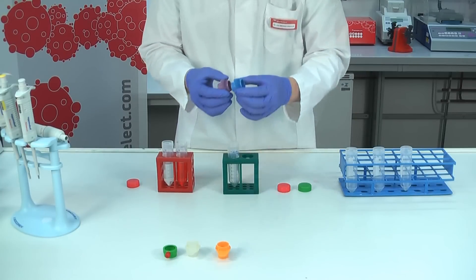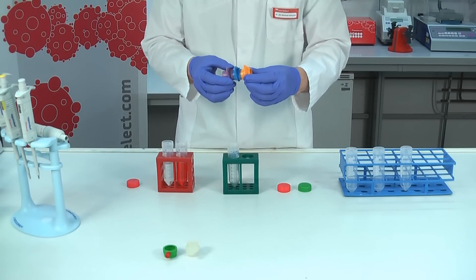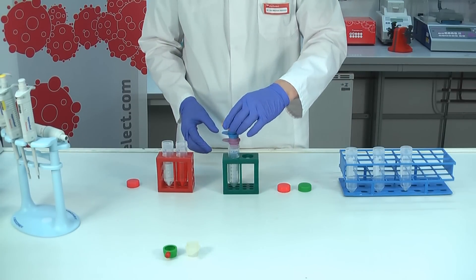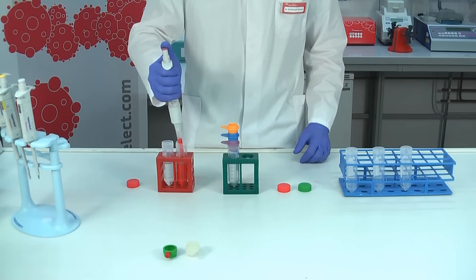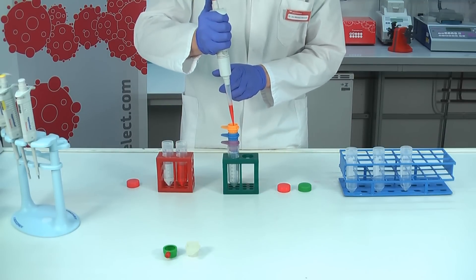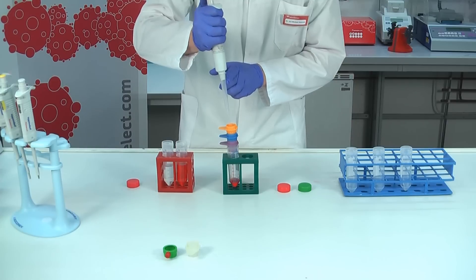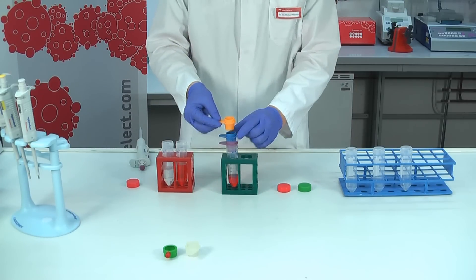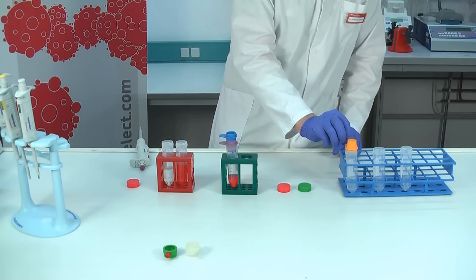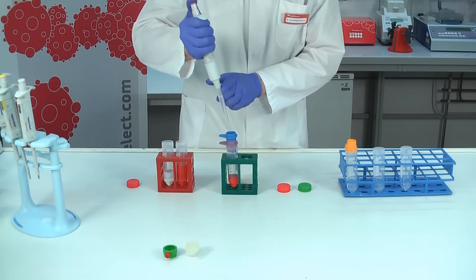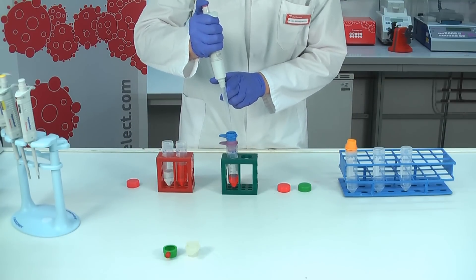It is also possible to stack various pluriStrainers together. This way you can sieve different sizes. Add your sample material on top and then wash sufficiently with wash buffer. When everything has run through, remove the pluriStrainer on top and put it upside down on a fresh tube. Repeat this step for each strainer.